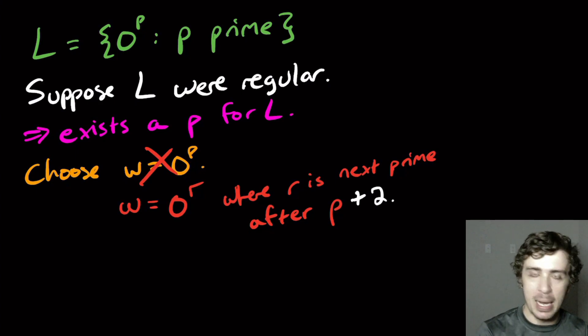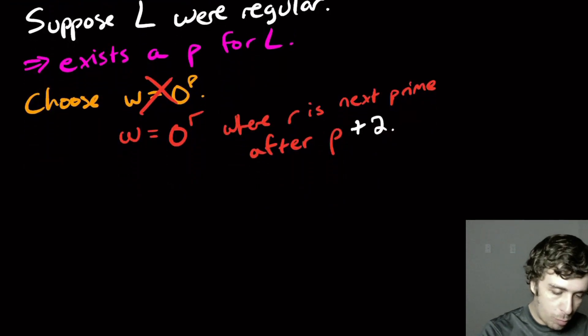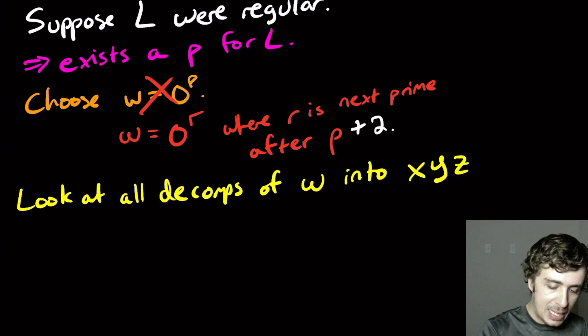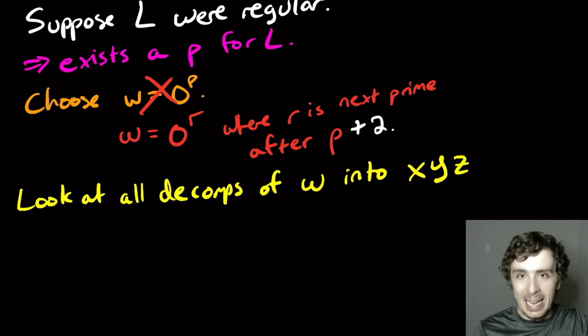Why do we want a string that's not prime? Because we want to get a string that's not in this language. We start off with a string that's in the language and we want to end up with a string that is not in this language. So we need to look at all decompositions of this string W into x, y, and z according to the rules. Well, the whole string is zeros so it doesn't matter.